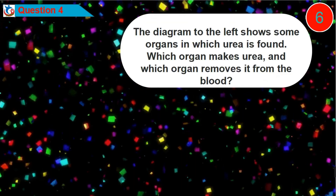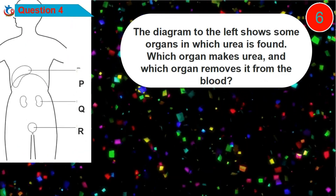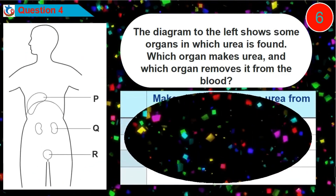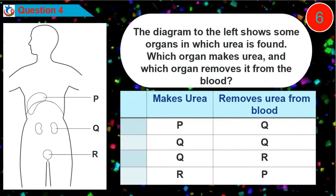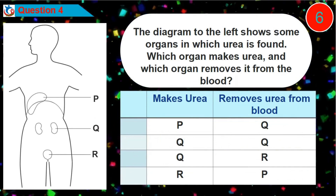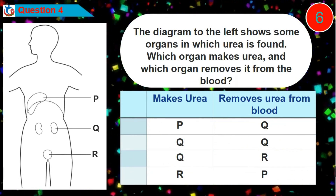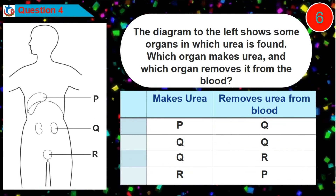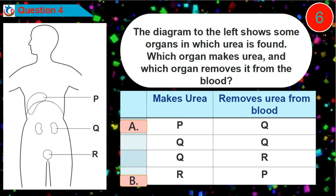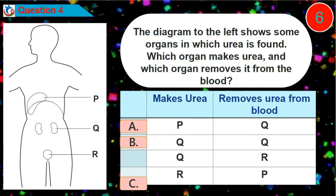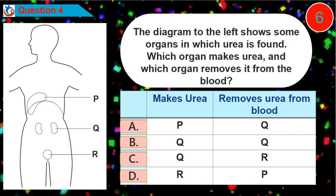Question 4. The diagram to the left shows some organs in which urea is formed. Which organ makes urea and which organ removes it from the blood? Is it option A, B, C, or D?